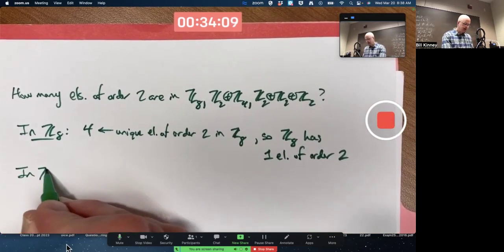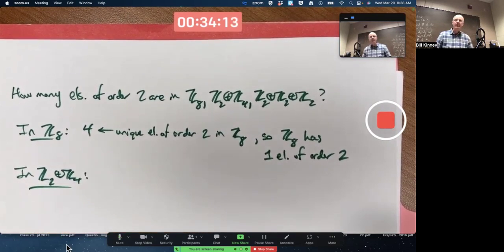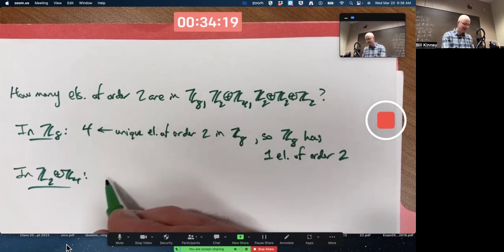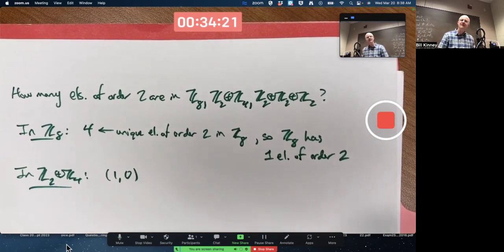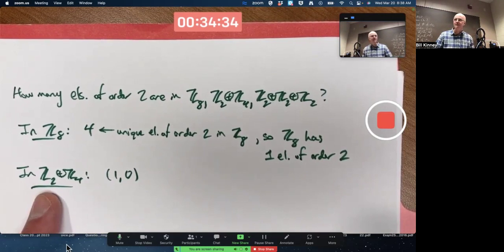In the external direct product of Z2 with Z4, you can do a little bit of experimentation. You're looking for elements of order two. Here's one of them, right? One, zero added to itself. One, zero plus one, zero would be two, zero. Zero, but two mod two is zero. You get back to zero, zero, the identity.